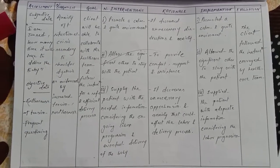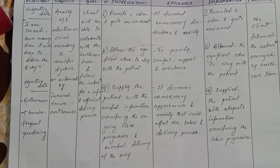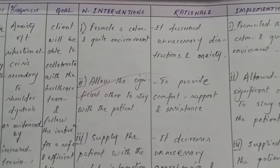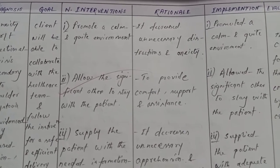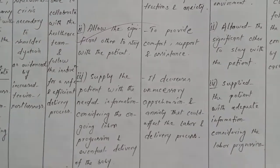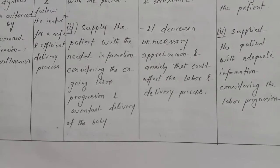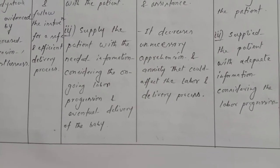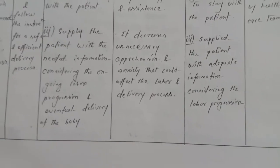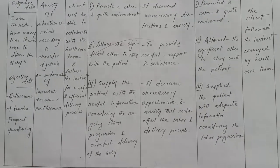Care plan — anxiety related to situational crisis secondary to shoulder dystocia. Nursing interventions: promote a calm and quiet environment (rationale: decreases unnecessary distraction and anxiety); allow significant other to stay with patient for comfort and support; supply the patient with needed information regarding ongoing labor progression and eventual delivery of the baby to decrease apprehension. Evaluation: the client followed instructions conveyed by the healthcare team.